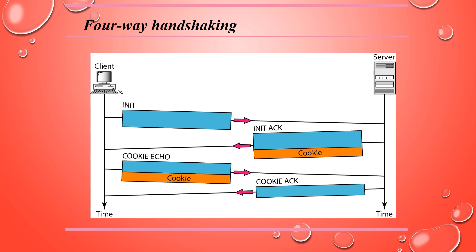With TCP, an attacker can flood a TCP server with a huge number of sync segments using forged IP addresses. Each time the server receives a sync segment, it sets up a state table and allocates resources while waiting for the next segment. The server may collapse due to exhaustion of resources. In SCTP, we have a strategy to prevent this type of attack: postpone the allocation of resources until reception of the third packet, when the IP address of the sender is verified.